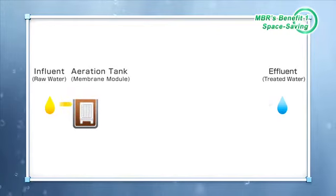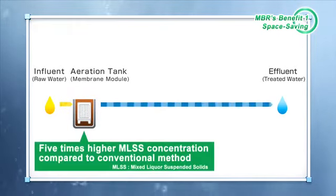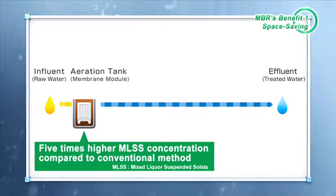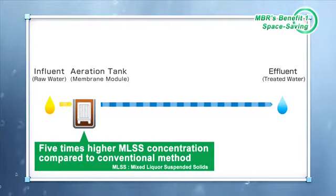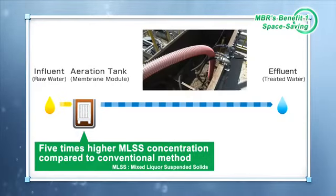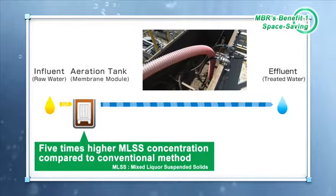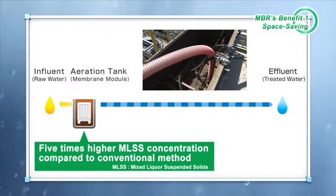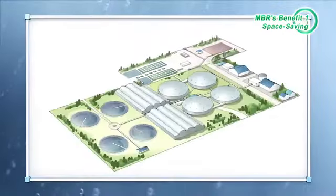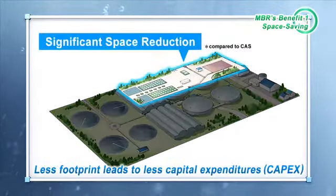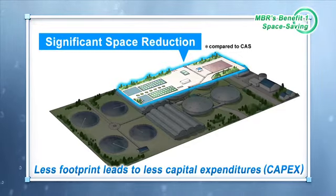In addition, MBR can process activated sludge that is five times thicker — in other words, it has a processing capability five times better than conventional methods. For this reason, MBR can treat more water even with a smaller biological treatment tank. As a result, the area required for water treatment plants can be decreased, leading to lower land and construction costs.